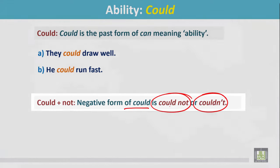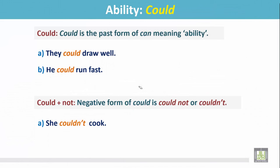Examples: She couldn't cook. Ahmed could not swim. Both of them were unable to do something, and it expresses their past ability.